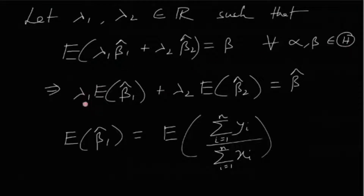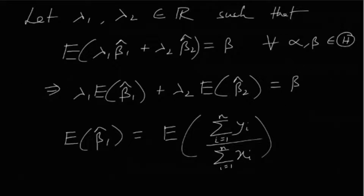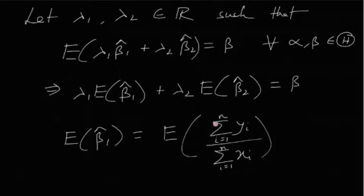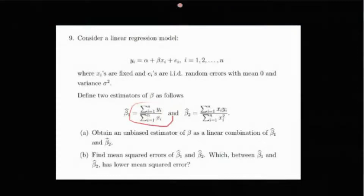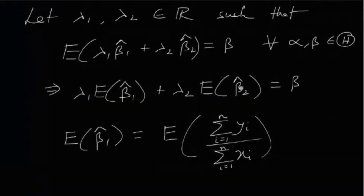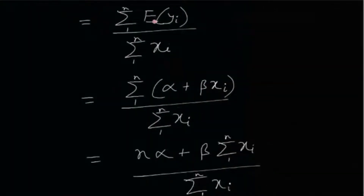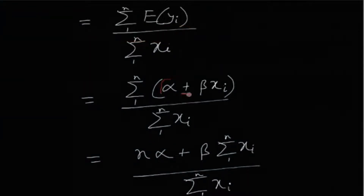This condition becomes: λ₁·E[β̂₁] + λ₂·E[β̂₂] = β. So first, let us find E[β̂₁]. The expectation of β̂₁ = Σyᵢ / Σxᵢ. Since xᵢ is fixed, this equals Σ E[yᵢ] / Σxᵢ. Now E[yᵢ] = α + βxᵢ, since α and β are parameters, xᵢ are fixed, and eᵢ has expectation zero.